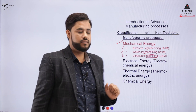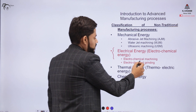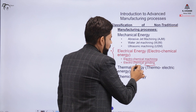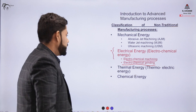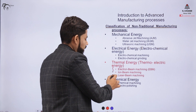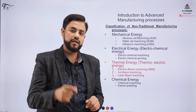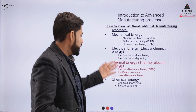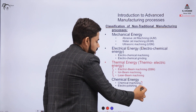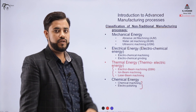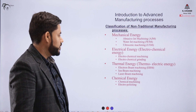Under electrical or electrochemical energy, the example is ECM (electrochemical machining), where electrical and chemical energy removes material from the surface. Under thermal energy, examples include electron beam machining, where a beam of electrons heats the material surface causing metal removal, and similarly ion beam machining and laser beam machining. Under chemical energy, we have chemical machining and electro polishing, where material is removed by chemical action on the surface.